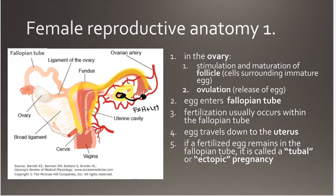The eggs should be taken up within the fallopian tubes and go down toward the uterus. At the bottom of the uterus, we have a smooth muscle called the cervix, and that should close the uterine environment from the vagina.